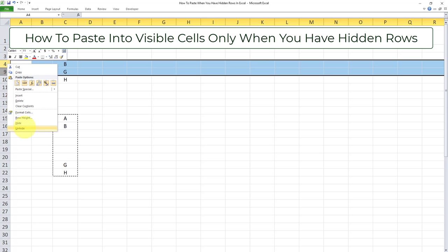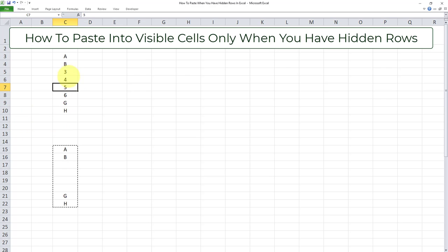So I'll go ahead and unhide this. And as you can see, the hidden cells contain the old values 3, 4, 5, and 6. And this copy and paste that we did using this approach did not affect the hidden cells at all.